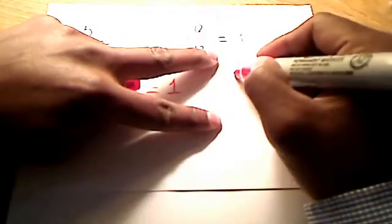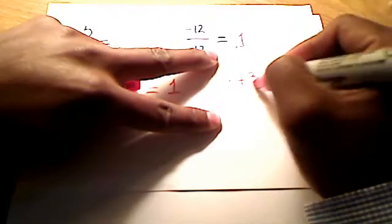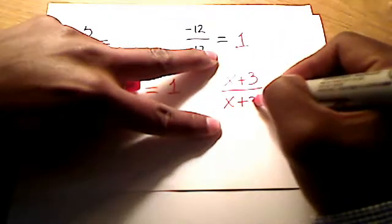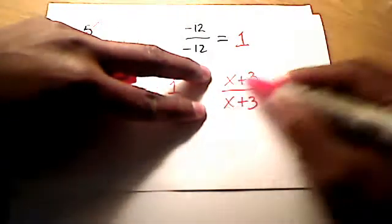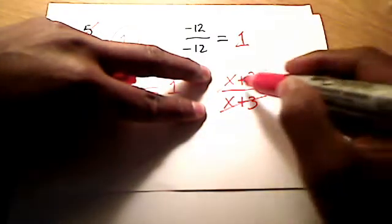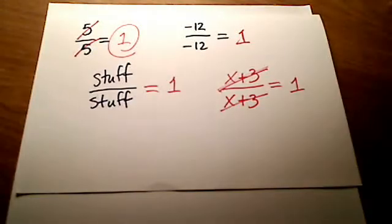How about even something like this, if you had x plus 3 over x plus 3, can we cancel them out? Does that equal 1? Yeah, it does. Even that's a 1, because if they're exactly the same, you can cross them out.